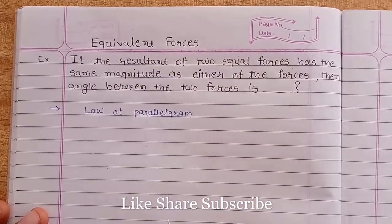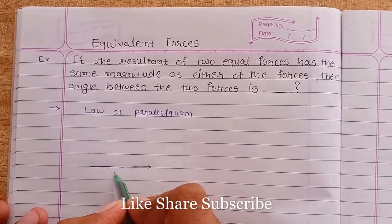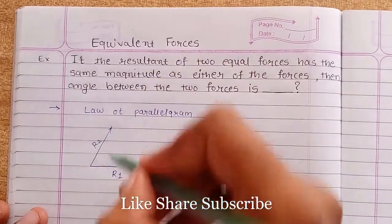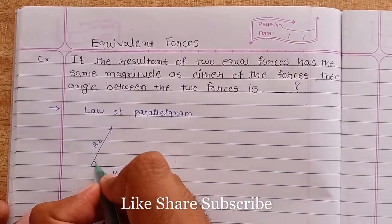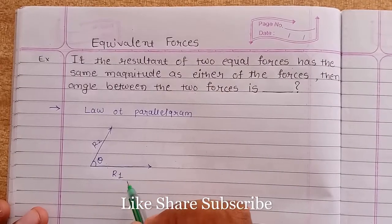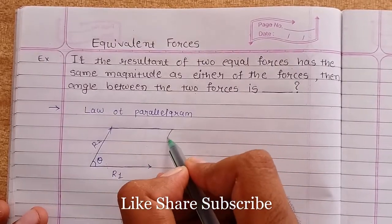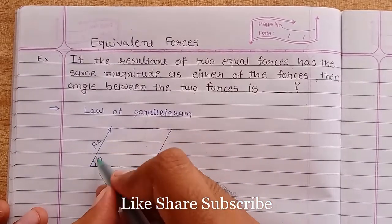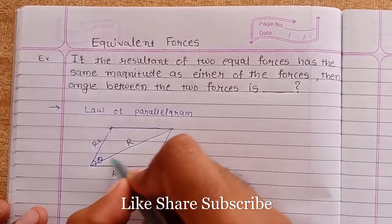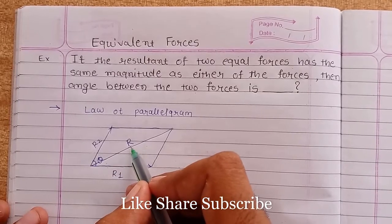This method states that if the two forces are the two sides of a parallelogram — let's say one force is R1 and another force is R2 — and they are two sides of the parallelogram with an included angle theta, then the resultant of these two forces is given by the diagonal of the parallelogram passing from the intersection of these two forces.